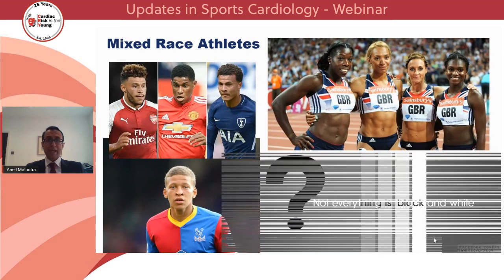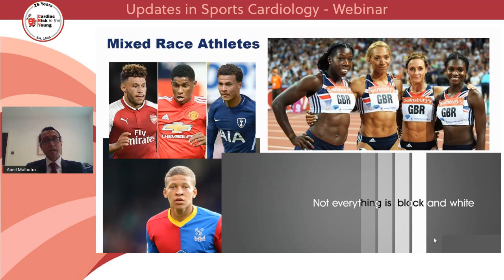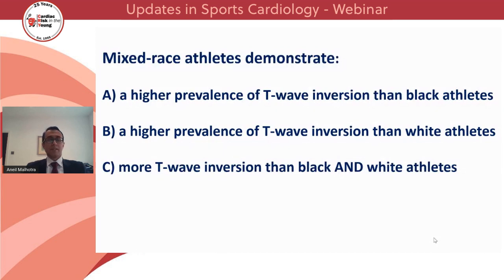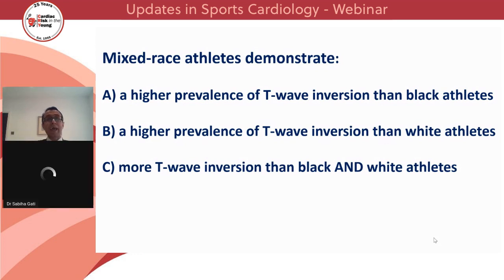Not only are we observing variations amongst black athletes, but the mixed race population has never before been described in this context. A mixed race individual is defined as one with one parent of white Caucasian origin and one of black Caribbean or African origin, per UK census classification. There are an estimated 2 million mixed race individuals in the UK, accounting for 3% of the population. Conventionally, mixed race athletes have been assumed to demonstrate similar cardiac adaptations to black athletes, though this assumption is unfounded and yet to be proven — and this is the fastest growing ethnic group amongst athletes in both the USA and Europe.